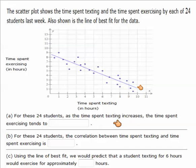So it says for these 24 students, as time spent texting increases, the time spent exercising tends to decrease. So the more we text, the less we exercise. So in this case, we would be decreasing.